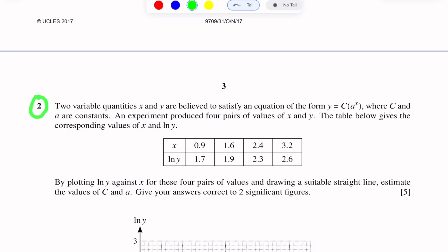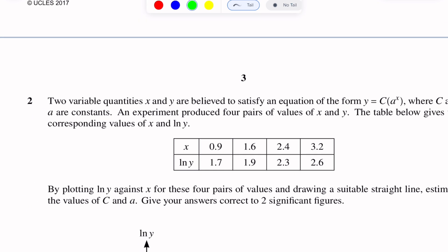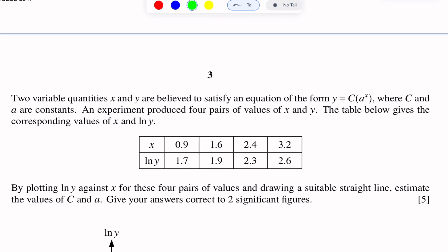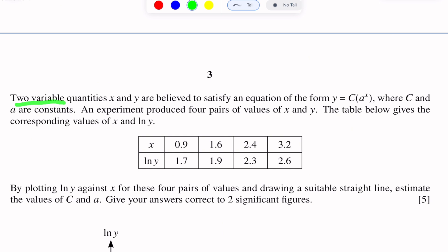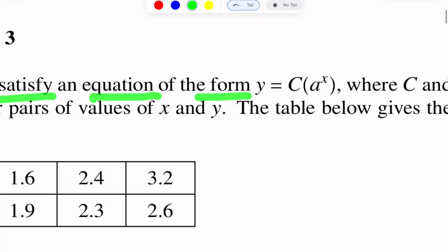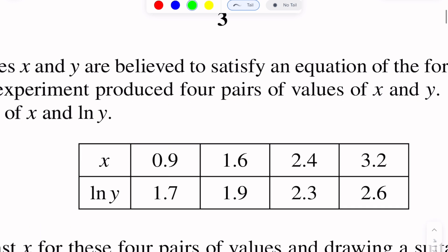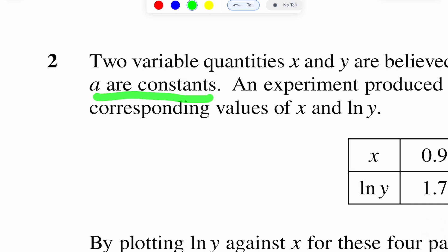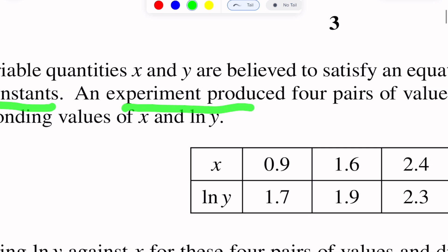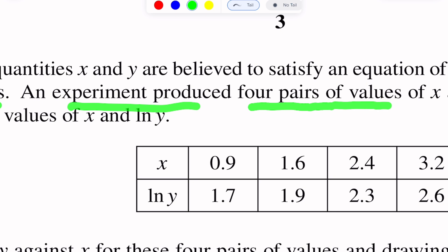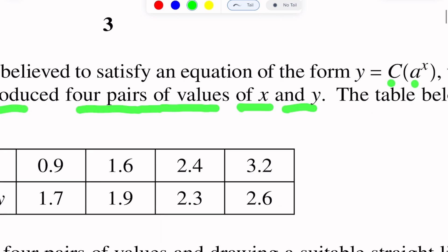Question number 2. This question is of logarithm — reduction to a linear law. Two variable quantities X and Y are believed to satisfy an equation of the form Y is equal to C into A power X, where C and A are constants. An experiment produced four pairs of values of X and Y.